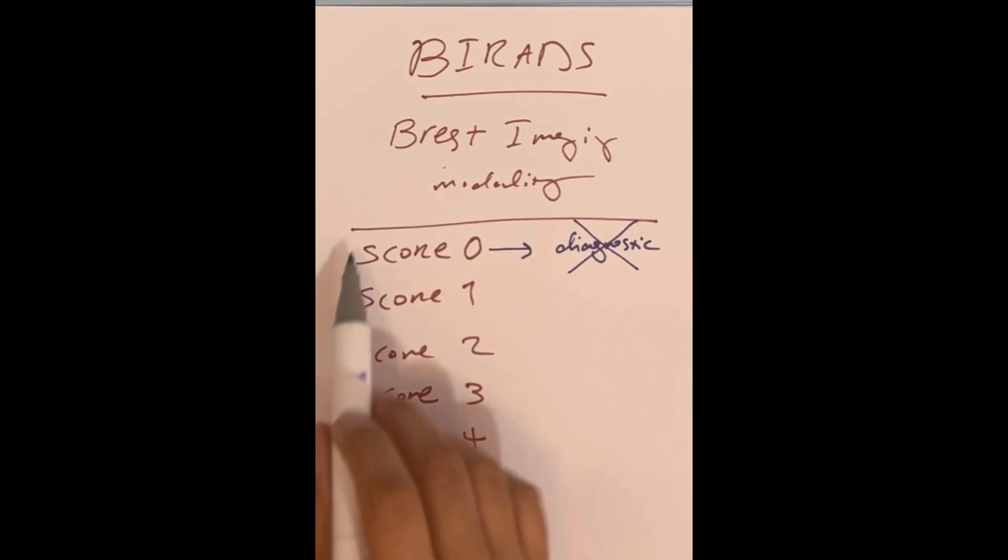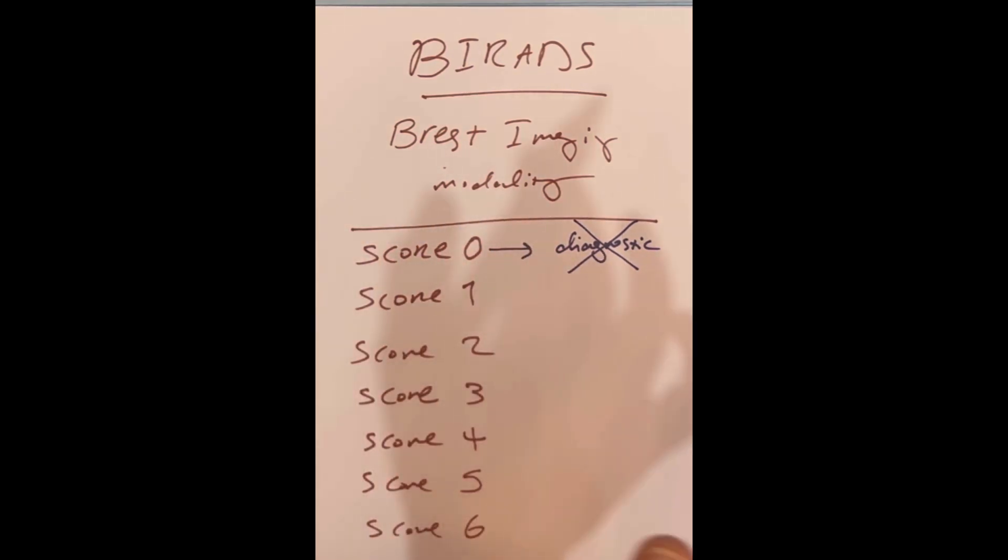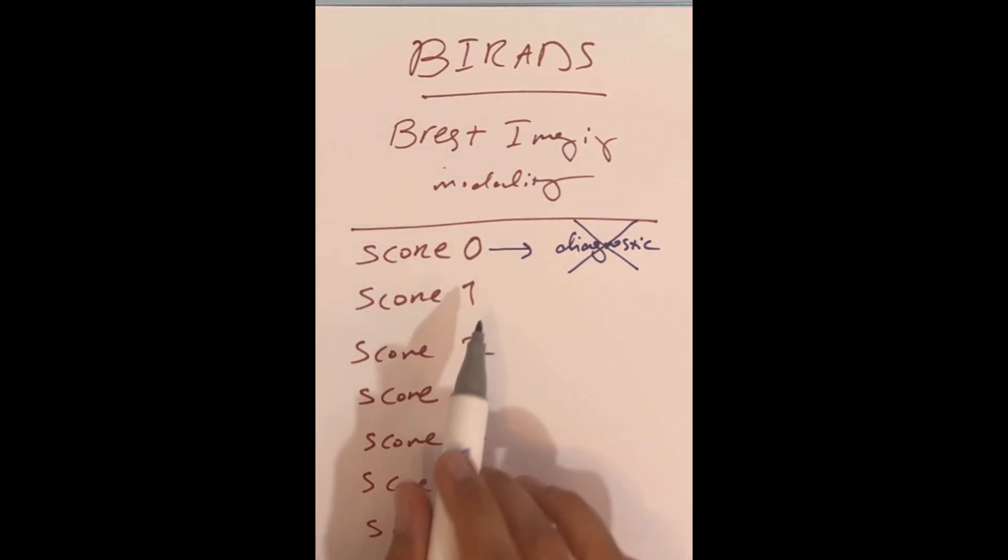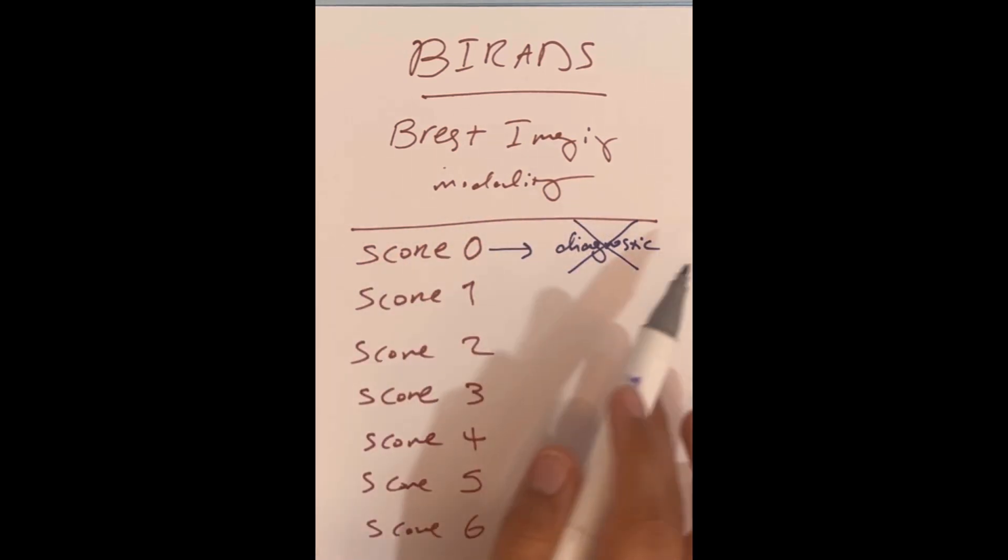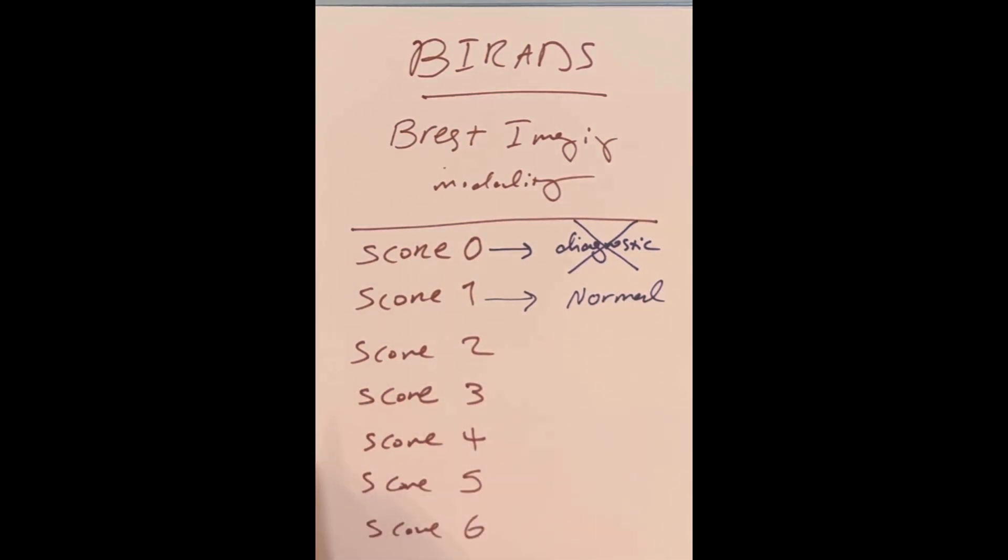Score 0 doesn't mean normal; it means the modality is not diagnostic. Score 1 means the imaging is really normal without any deformity, any tumors, any cysts, any fibroadenoma—everything is completely normal.